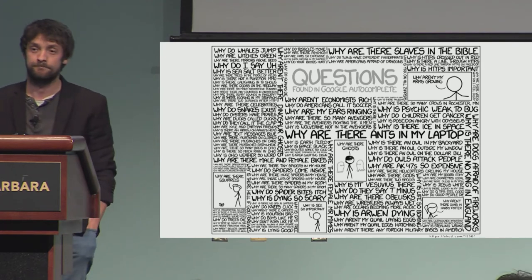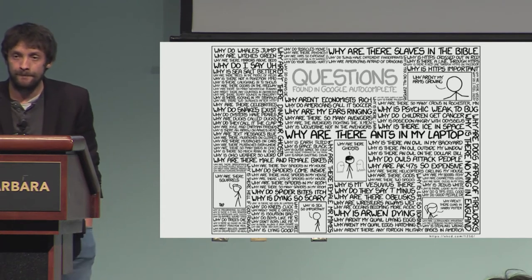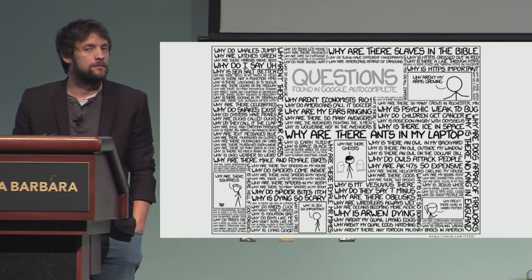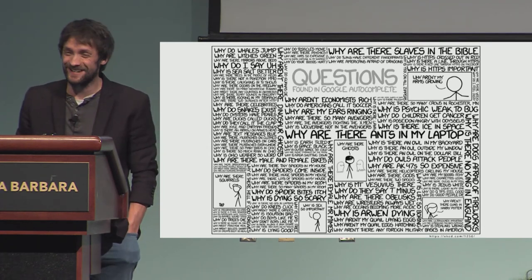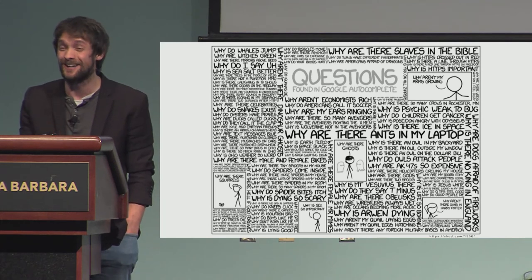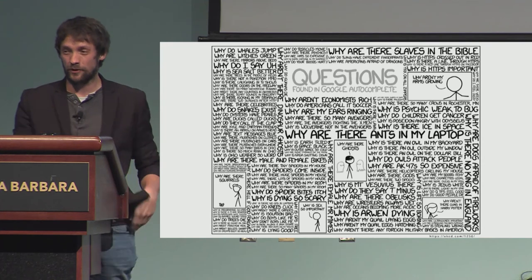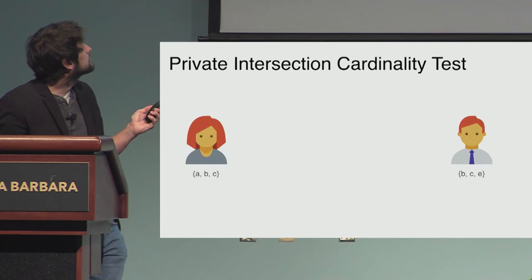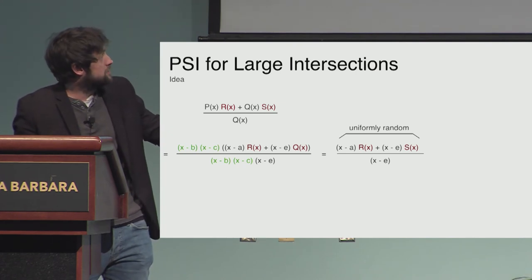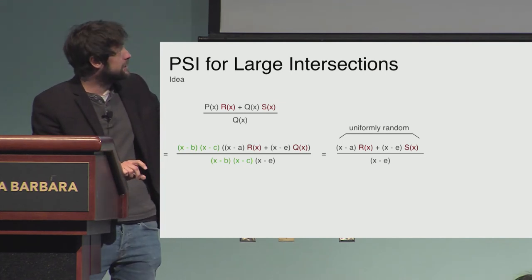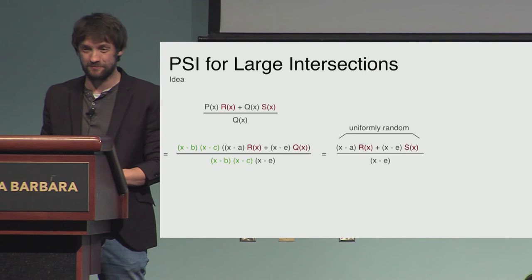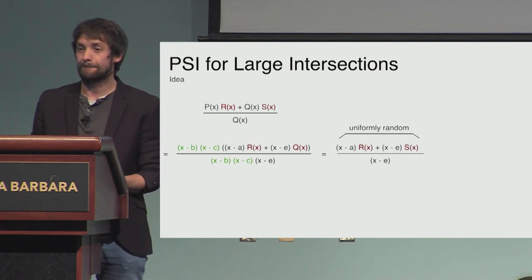Question: Your protocol only works for large intersections — does only correctness break if the intersection is too small, or does privacy also break? That's a tricky question and actually a follow-up we've been trying to answer for six months. What happens is that these polynomials end up having a larger degree, and in general this rational function does not sufficiently hide those polynomials, but since you're only getting a certain number of evaluation points it might still do so — which is something we have no idea how to prove. It's surprisingly tricky.